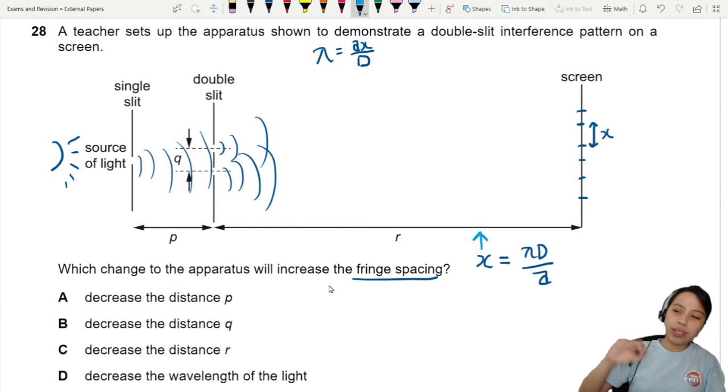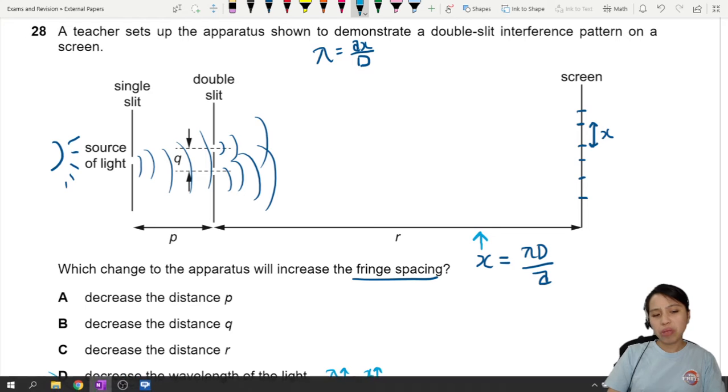So what could you change? I'm not going to look at the answer yet. So let's look at lambda first. If I want X to increase, I must increase the wavelength. So I look at choice D. Oh, decrease, wrong already. Because if you increase the wavelength, then only you can get an increase in fringe spacing. So not correct.